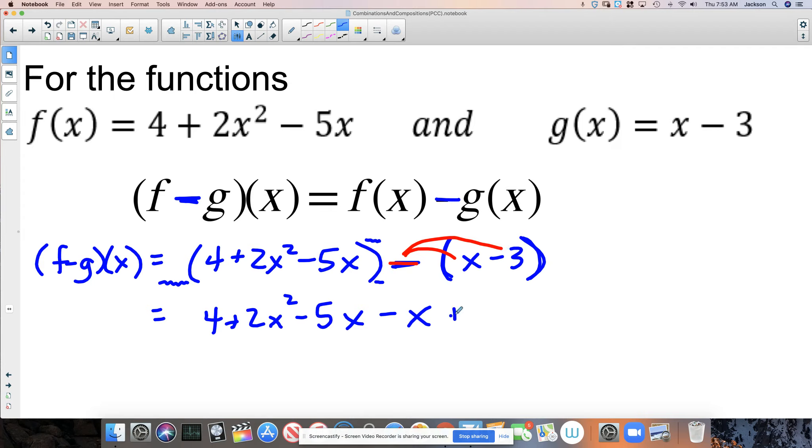Subtracting a negative 3 is the same thing as addition. You wouldn't see that if you didn't put these parentheses. If you just wrote this minus x minus 3 like that, and you just put that in for g of x without the parentheses, you notice this would be wrong. This has to be a positive 3 because we're subtracting all of those terms.